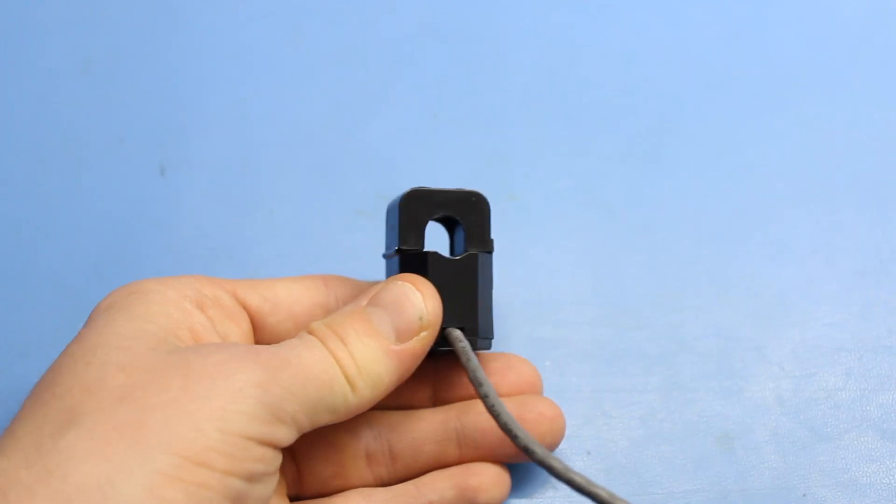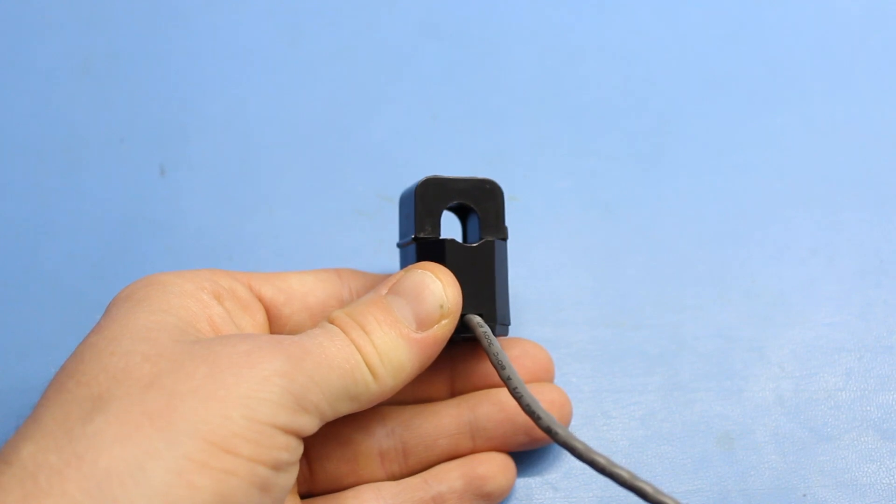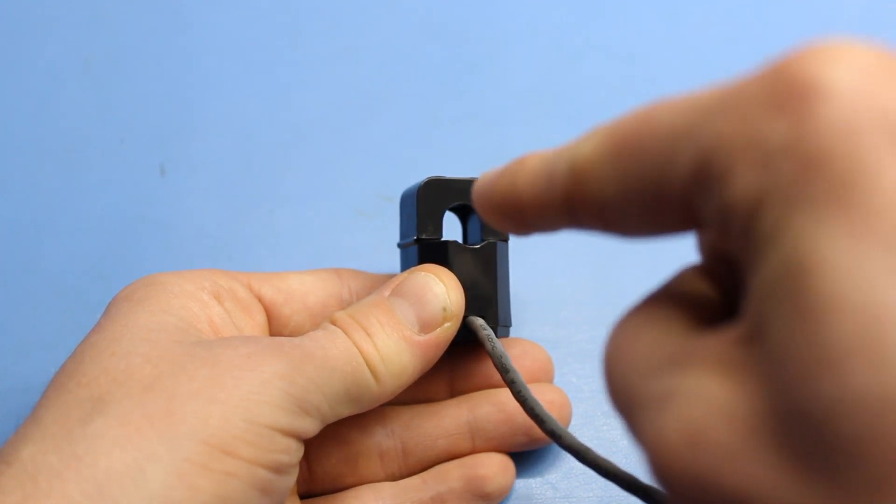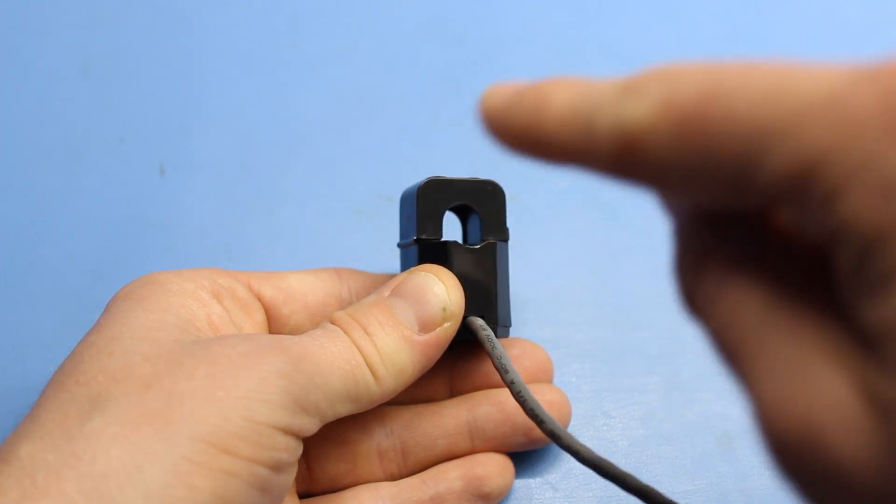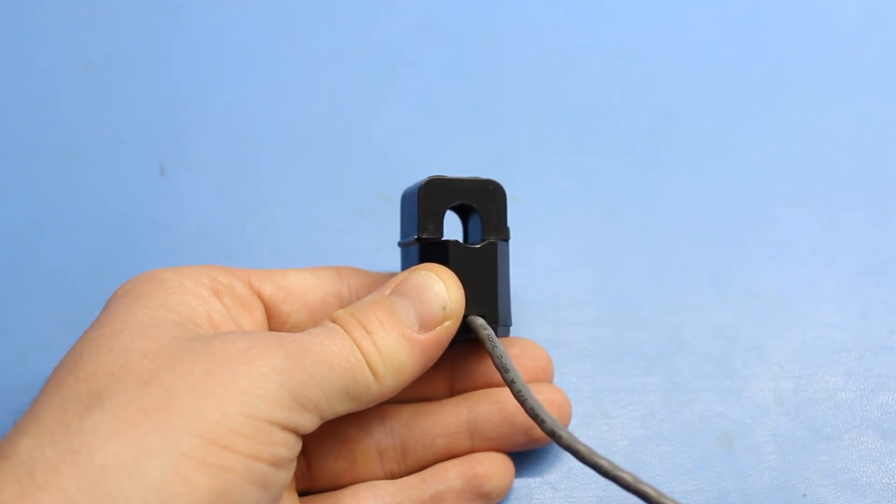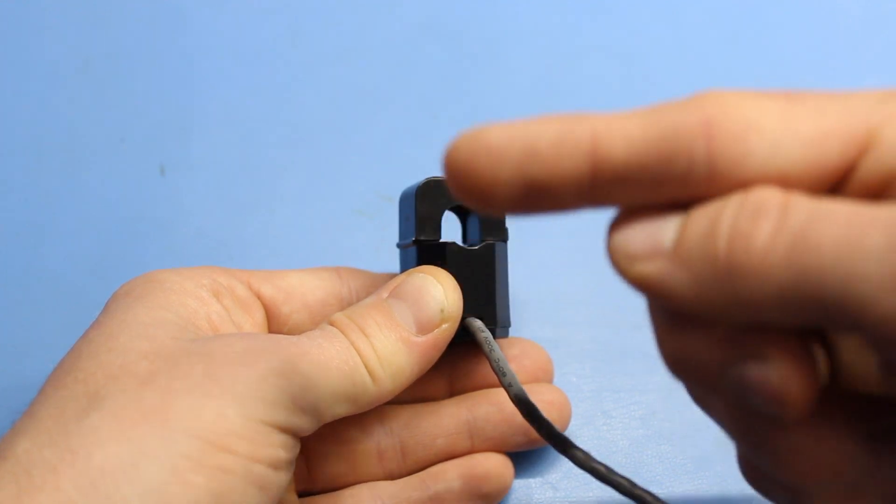To do that, we're going to use this non-invasive current sensor, also known as a split core current transformer, or a CT sensor. To use a CT sensor, we put the hot or neutral line feeding our appliance through the core. As current flows through the hole, it induces a current in the core, which in turn induces a current on the secondary windings that are wound around the core.